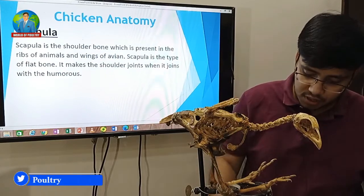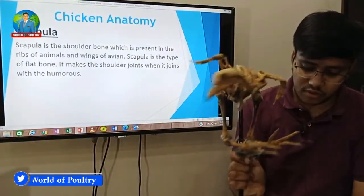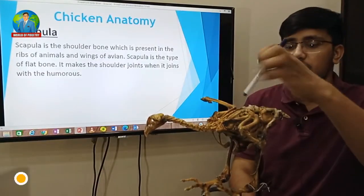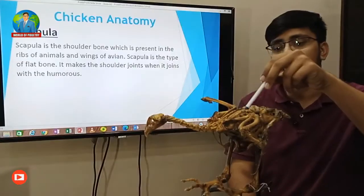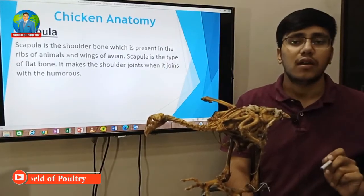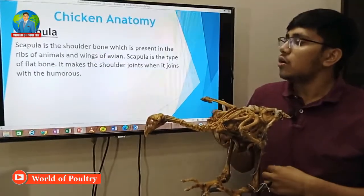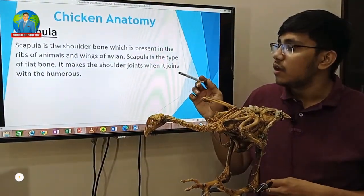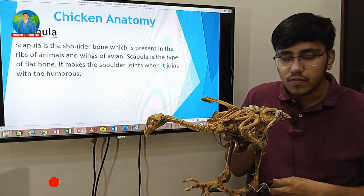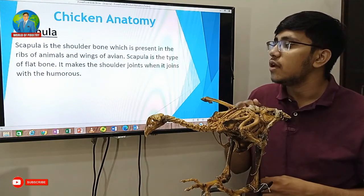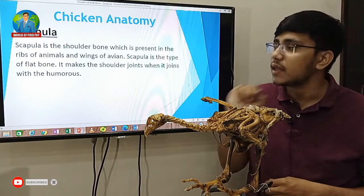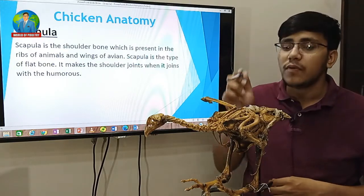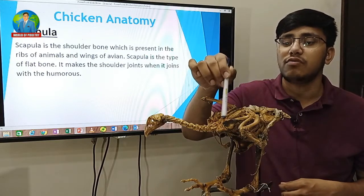Let me show you the other side. This is the scapula. This is the shoulder bone which is the wings of avian, and the scapula is the flat bone. It makes the shoulder joint with the help of the humerus. This is the humerus, and the humerus makes the shoulder joint.